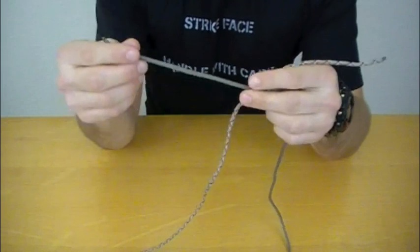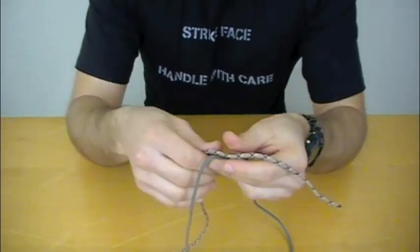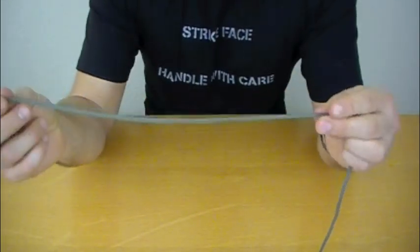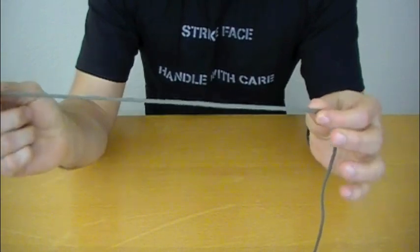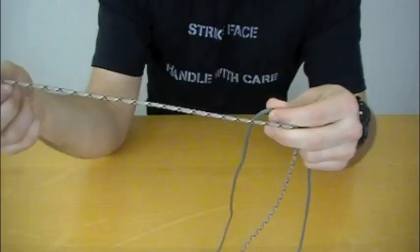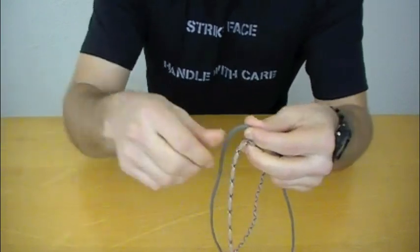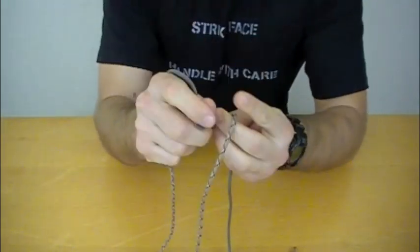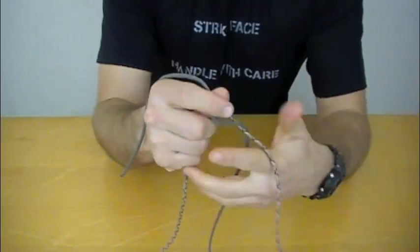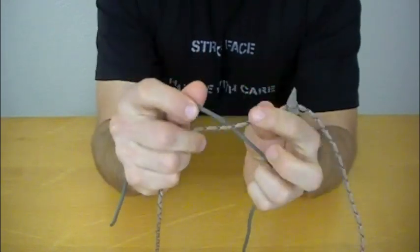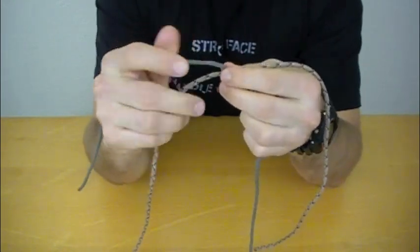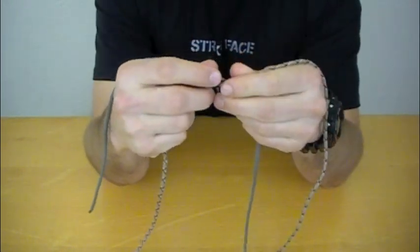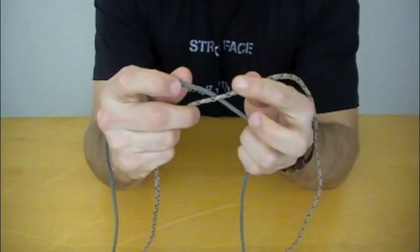So first, starting out to tie the blood knot, you're going to get about 12 to 14 inches or so of line on each side or each working end. And you're going to cross them or overlap them in the center, just like so. Now with each working end, you're going to make about eight wraps with each side.